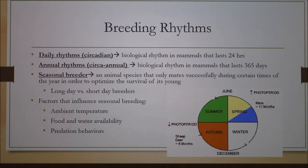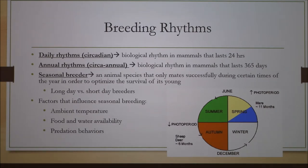We also have to understand what a seasonal breeder is. It's an animal species that only mates successfully during certain times of the year in order to optimize the survival of the young. Therefore we term them as long day or short day breeders, and there are many factors that influence this seasonal breeding, such as ambient temperature, food and water availability, and predation behavior.